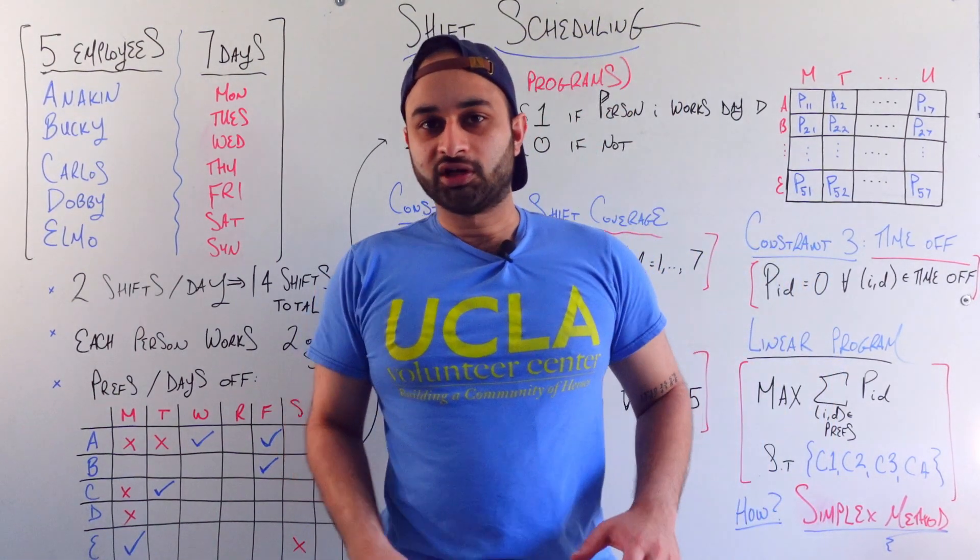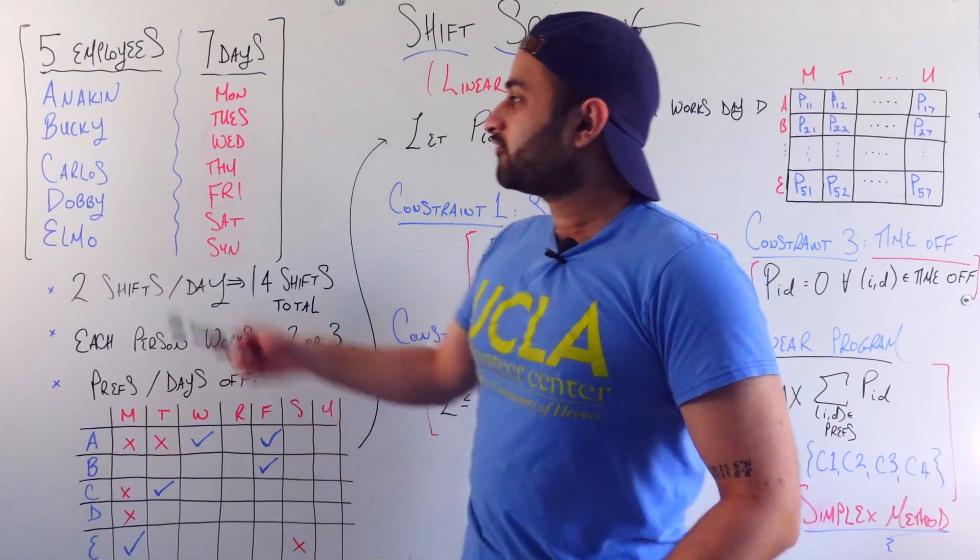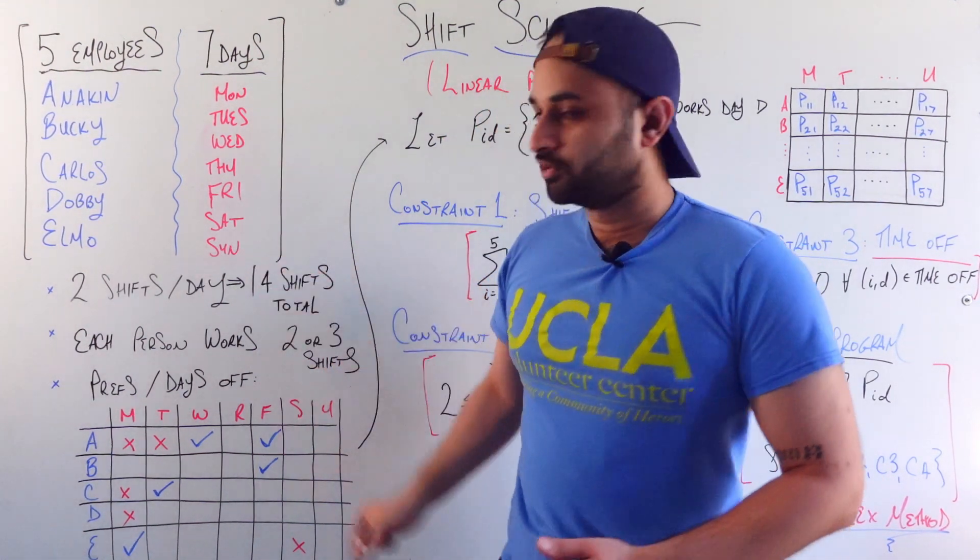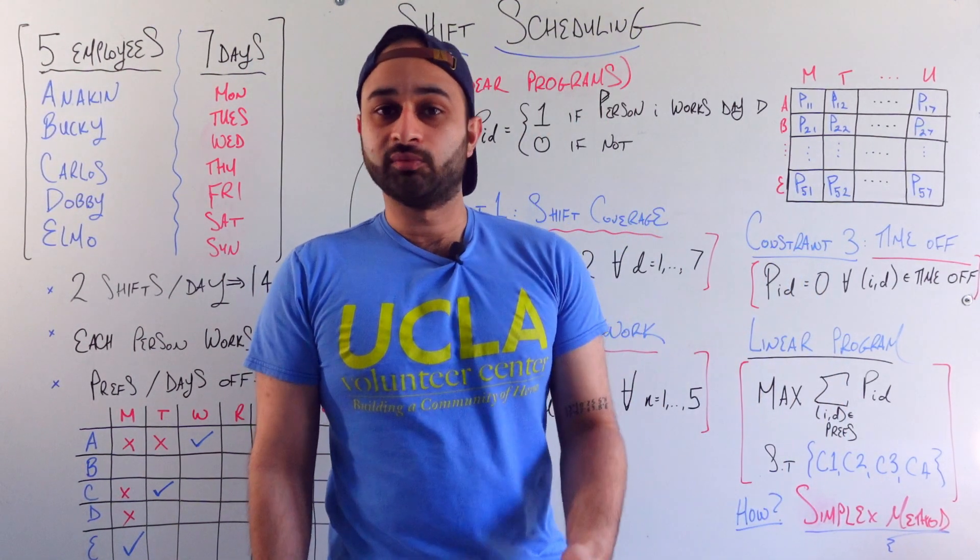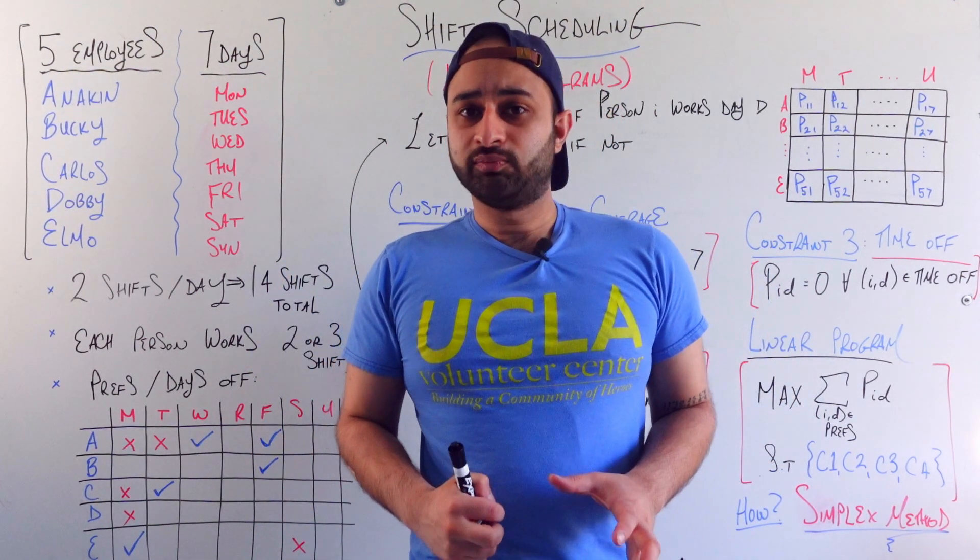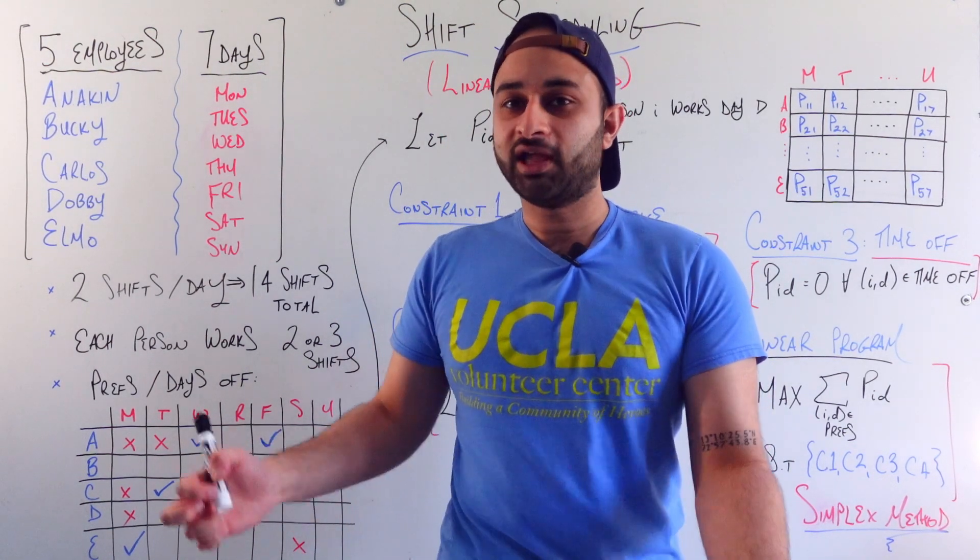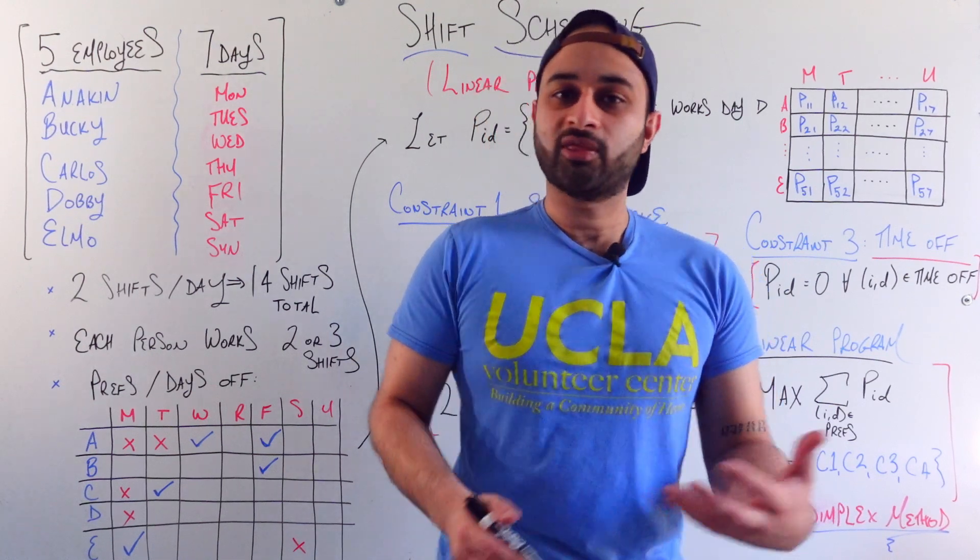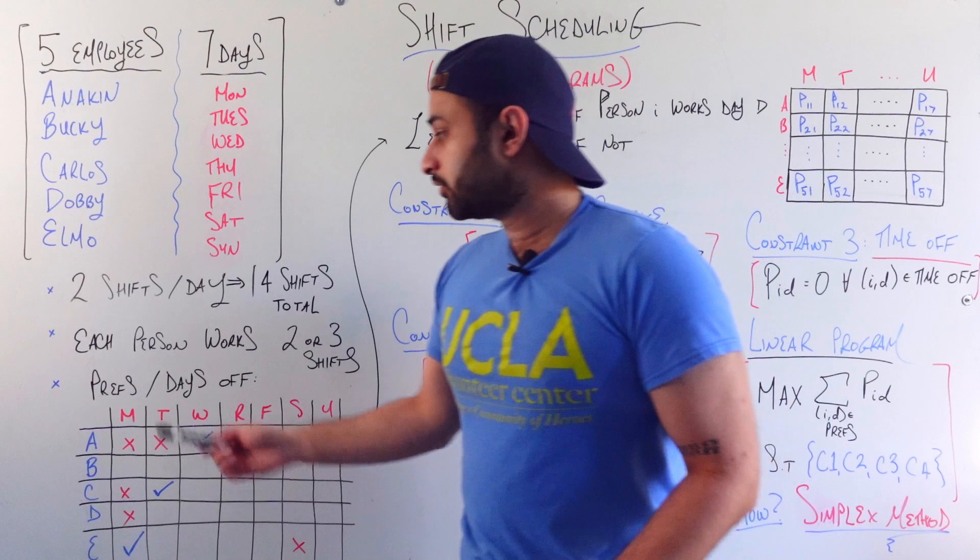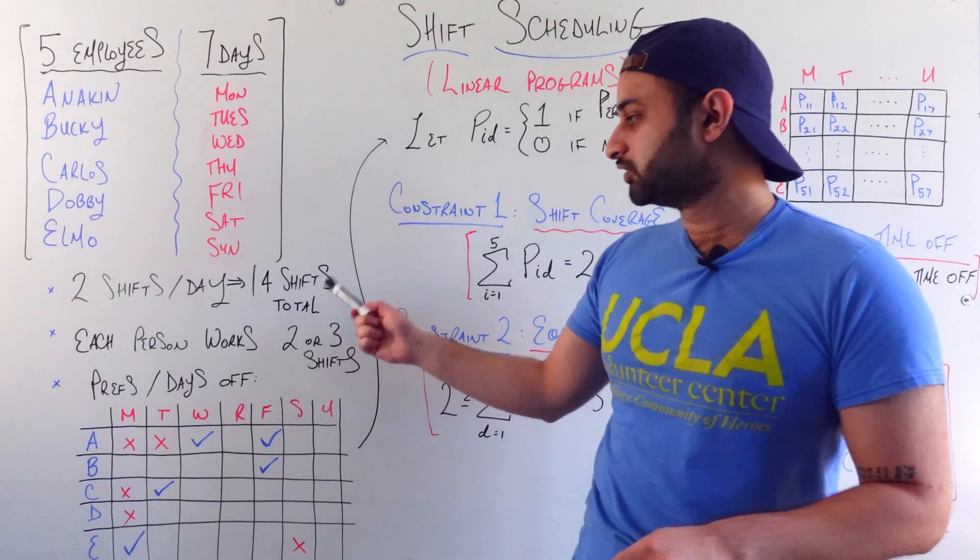So let's say that you're the manager of some kind of car rental agency, and you have five employees. You have Anakin, Bucky, Carlos, Dobby, and Elmo, and you have seven days of work you need to schedule Monday through Sunday of some given week. And so that's the first part of the story. Now come all of the constraints, because obviously you can't just schedule people whenever, you can't have one person working every day, so here's all the rules you need to follow, or in the mathematical terminology the constraints you have to obey. So first of all there's two shifts every single day. So every single one of these seven days there's two shifts, or 14 shifts total.